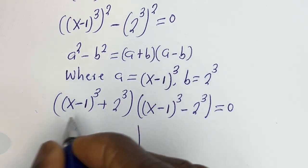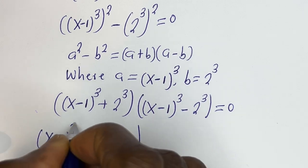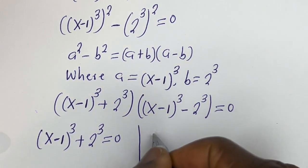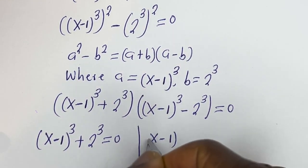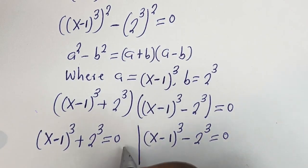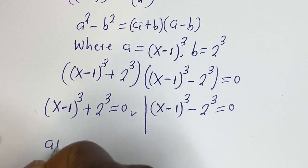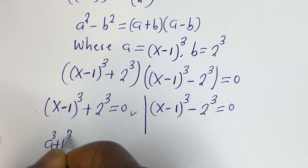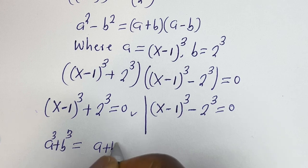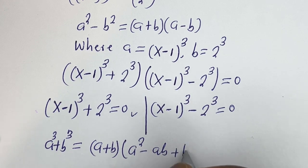There are two cases here. The first case is (x minus 1) to the power of 3 plus 2 to the power of 3 equals 0. The second case is (x minus 1) to the power of 3 minus 2 to the power of 3 equals 0. Take note that if you have a cubed plus b cubed, this is equal to (a plus b)(a squared minus ab plus b squared).